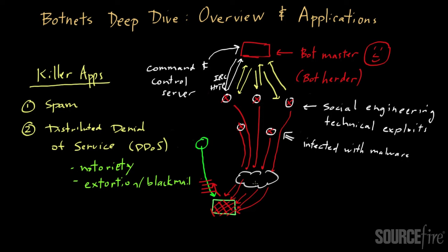For this type of thing to work, there's a big risk from the bot herder's perspective because he's revealing all of his different nodes involved in the attack. Also, the reason this tends to happen with more unsavory sites is that if you're dealing with a business that might not be on the up and up, you'll have a hard time going to the authorities about an extortion attempt, because they may not be willing to help out a site that does questionable things. That's another big application of botnets.